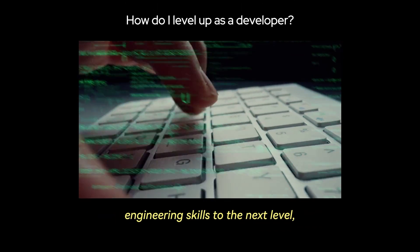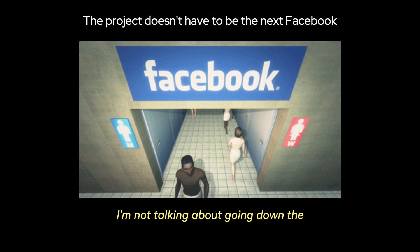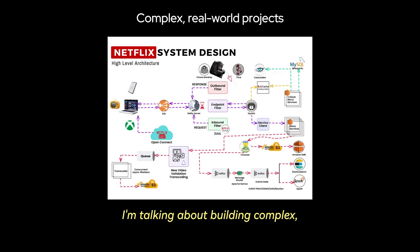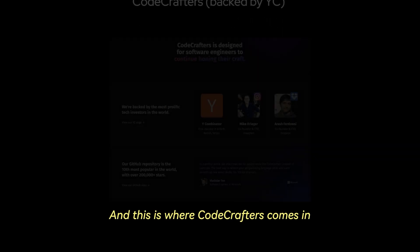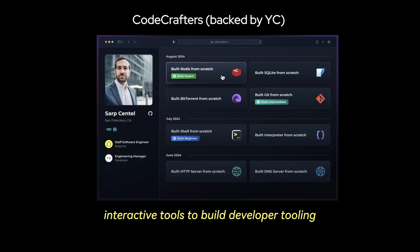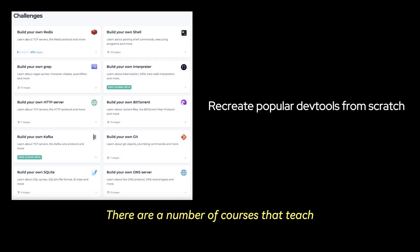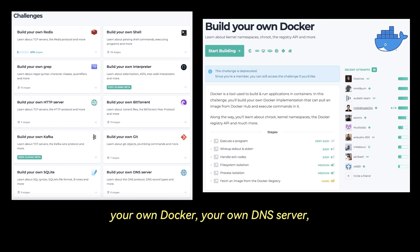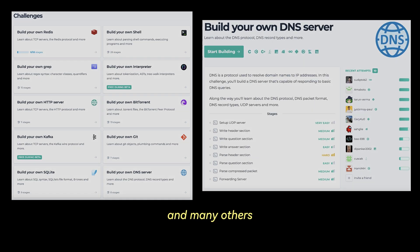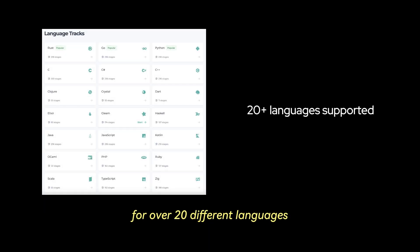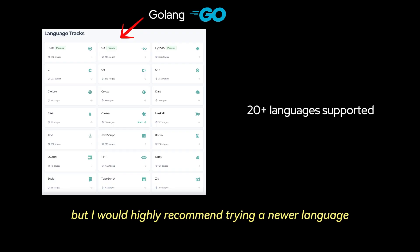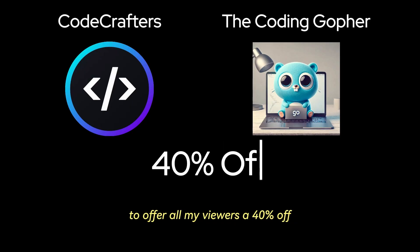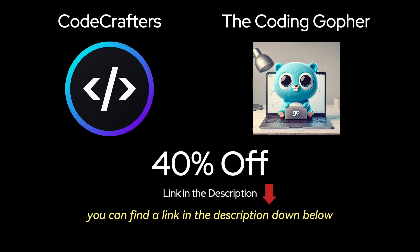If you are interested in taking your software engineering skills to the next level, I would encourage you to build projects — not tutorial hell to-do lists, calculators, or weather apps, but complex real-world projects beyond the basics. This is where CodeCrafters comes in. This platform provides interactive tools to build developer tooling from scratch, including courses on building Git, an in-memory Redis database, an HTTP web server, your own Docker, your own DNS server, and many others. There is built-in support for over 20 different languages — my favorite is Golang, but I'd highly recommend trying a newer language like Zig. I'm excited to announce I'm partnering with CodeCrafters to offer all my viewers 40% off — link in the description and pinned comment.